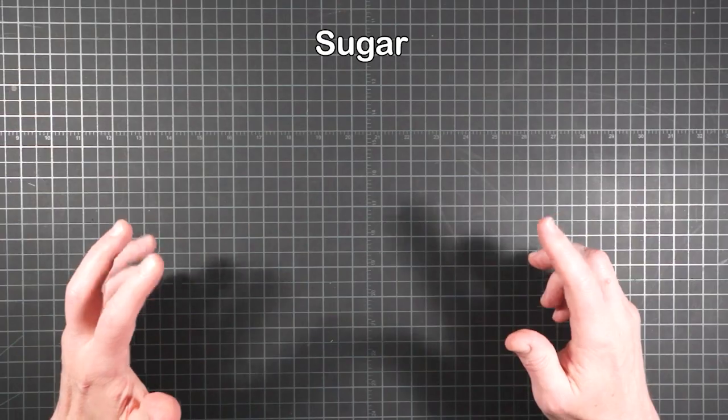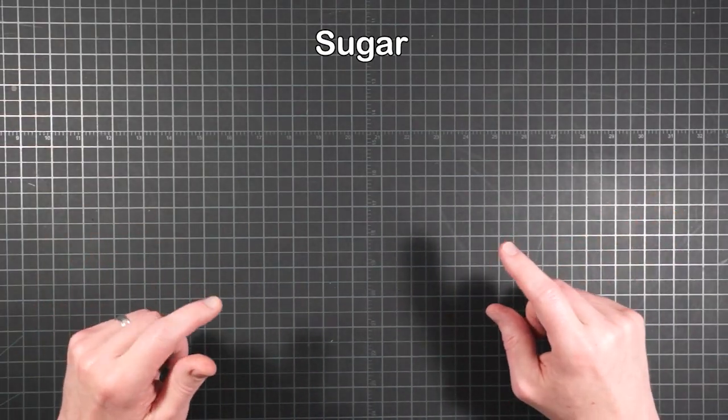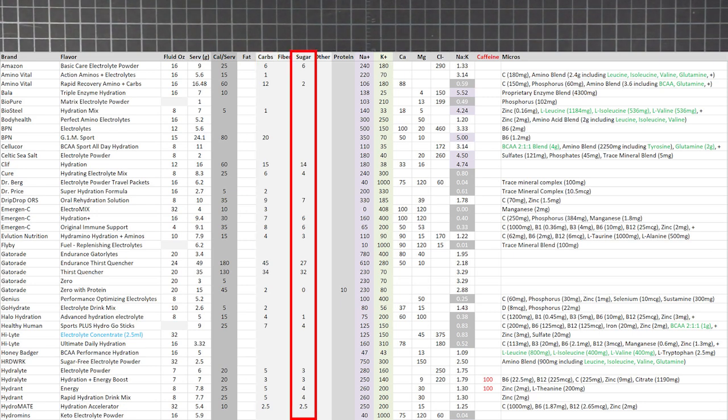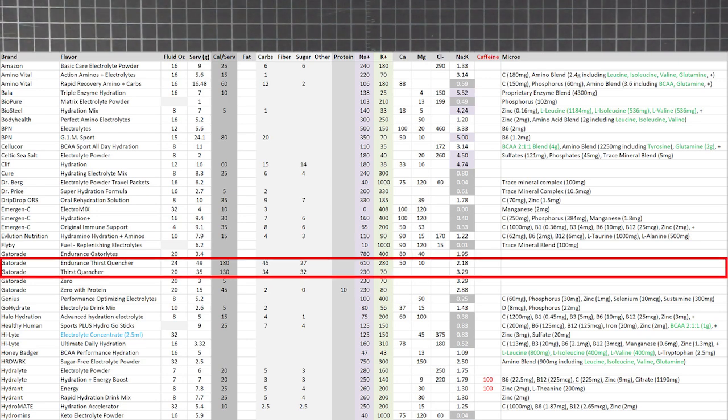Sugar is an even more common co-ingredient to electrolytes. The chart has columns for calories per serving, carbs, and the portion of those carbs that are from sugar. In larger amounts, that sugar is ostensibly there as fuel, like the classic Gatorade formulas.